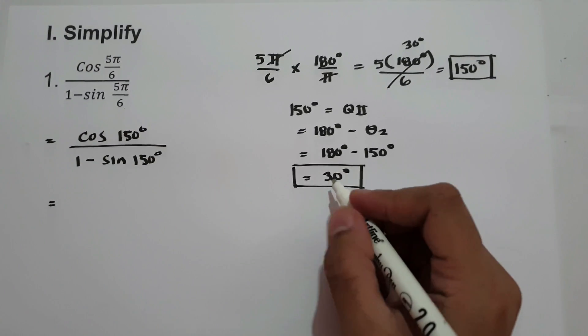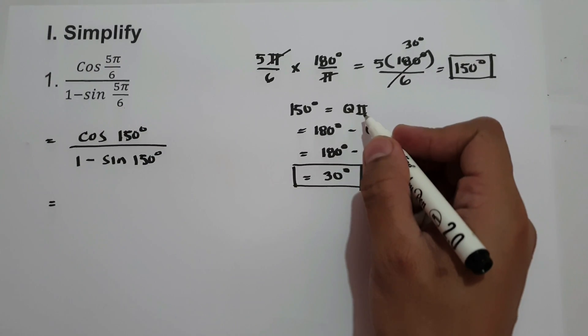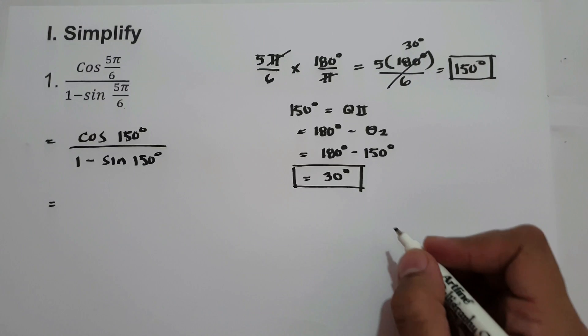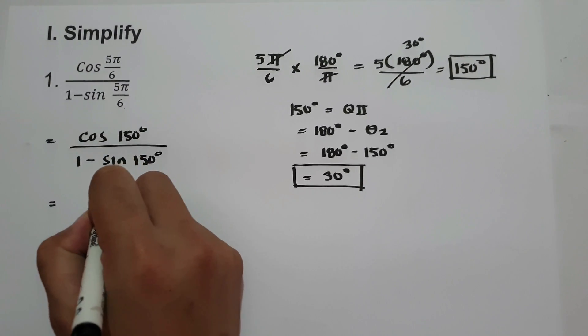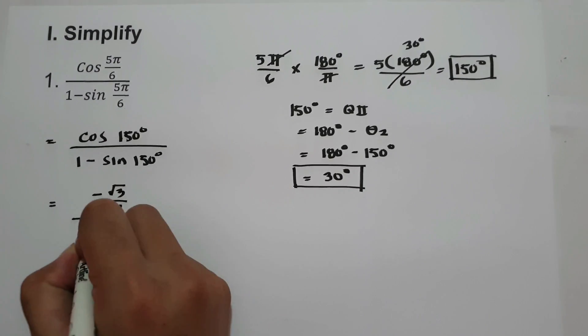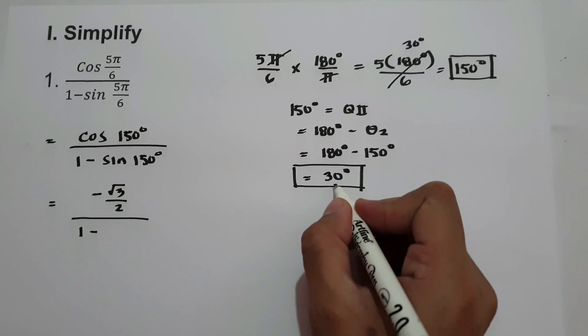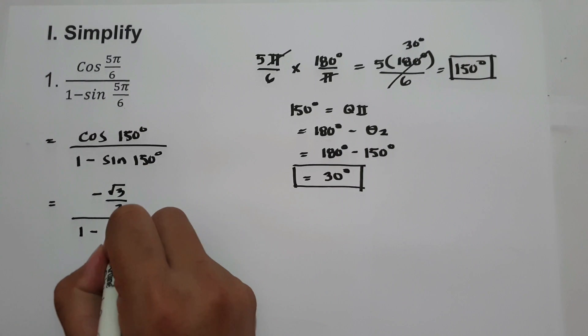Now, what is the value of cosine 30 in quadrant 2? Cosine 30 in quadrant 2 is negative square root of 3 over 2, over 1 minus sine 30 degrees in quadrant 2, that's 1 half.